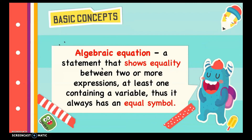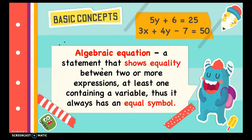On the other hand, an algebraic equation is a statement that shows equality between two or more expressions, with at least one containing a variable — so it always has an equal symbol. Examples: 5y + 6 = 25, or 3x + 4y minus 7 = 50. The key difference is that an equation shows equality between expressions.